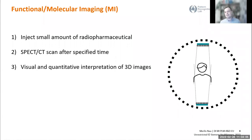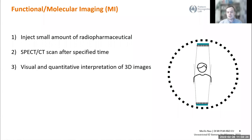Because we don't know exactly where the radiation is coming from — in contrast to CT — we have to have a collimator in front of our detector, which narrows down the direction of where those photons are coming from. Once you have acquired all of these projection images from all different directions around the patient, you can then reconstruct your image. After that comes the visual and quantitative interpretation of these 3D images.